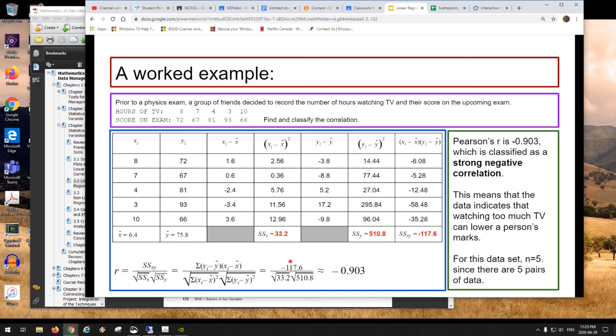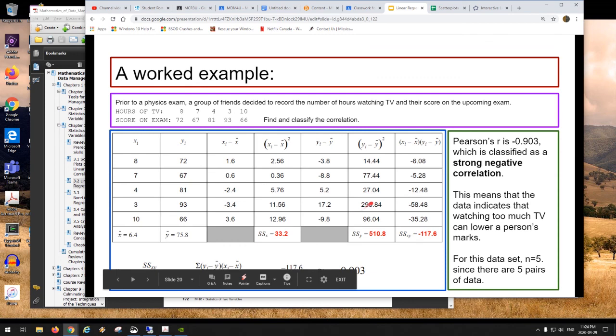If you get a correlation less than negative 1, like negative 2, negative 3, you're doing something wrong. You cannot get a correlation less than negative 1. You cannot get a correlation greater than positive 1. Your full range of correlations is entirely between negative 1 and positive 1. So negative 0.903 is a really strong negative correlation. It says that according to our data, watching a lot of TV indicates your mark will go down. The more hours spent watching TV, the lower your mark on a physics test.